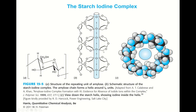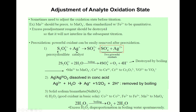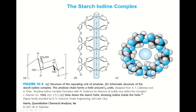When iodine is reduced to iodide, the blue color disappears. So the starch-iodine complex can be used as an indicator. Many iodimetry and iodometry procedures use this starch indicator, as we will see in detail shortly.